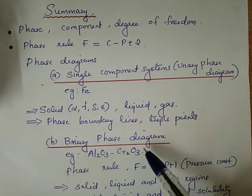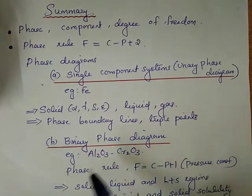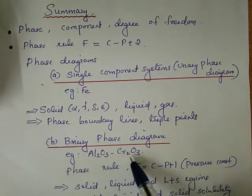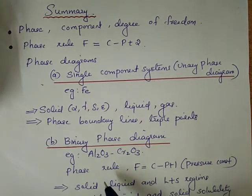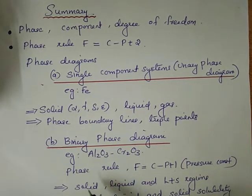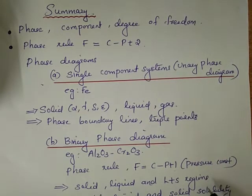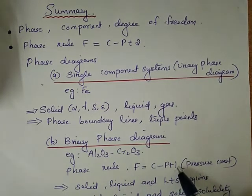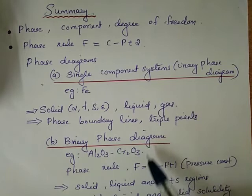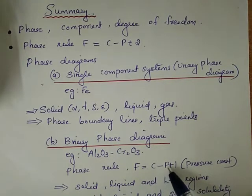The binary phase diagram involves two components, for example, the Al2O3–Cr2O3 phase diagram. The maximum number of variables is three, but when expressed on paper in two dimensions, pressure is held constant. With pressure constant, the phase rule becomes: F = C − P + 1.